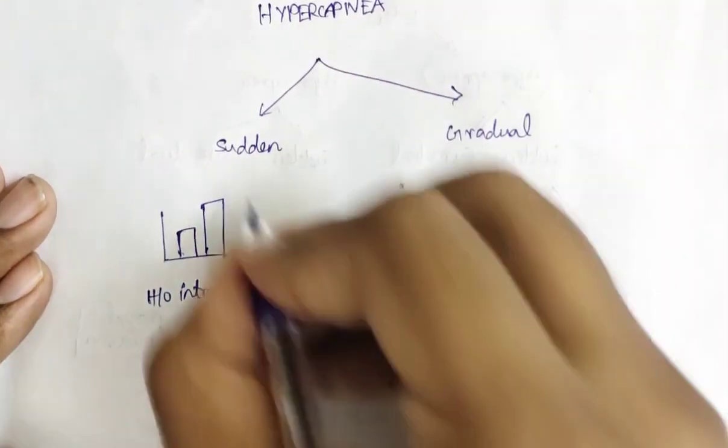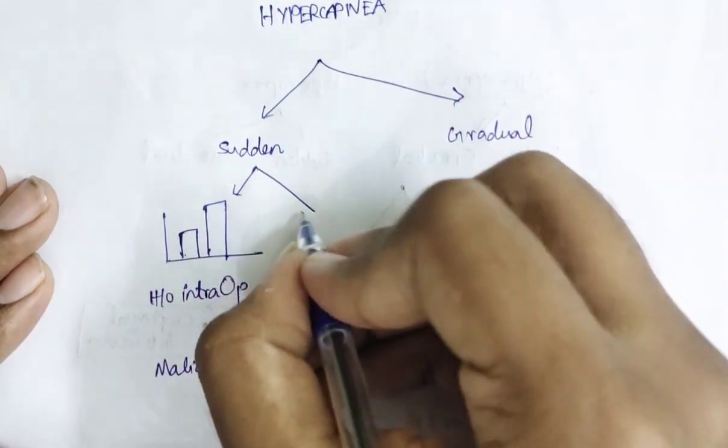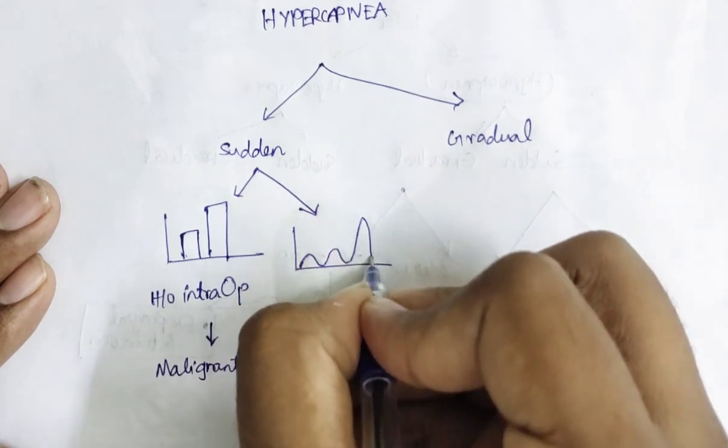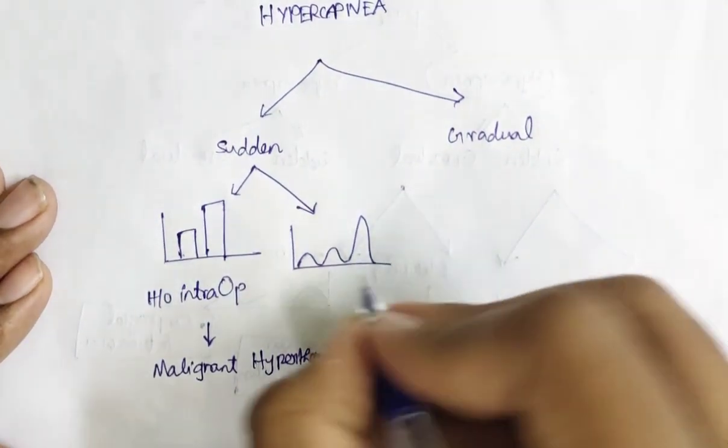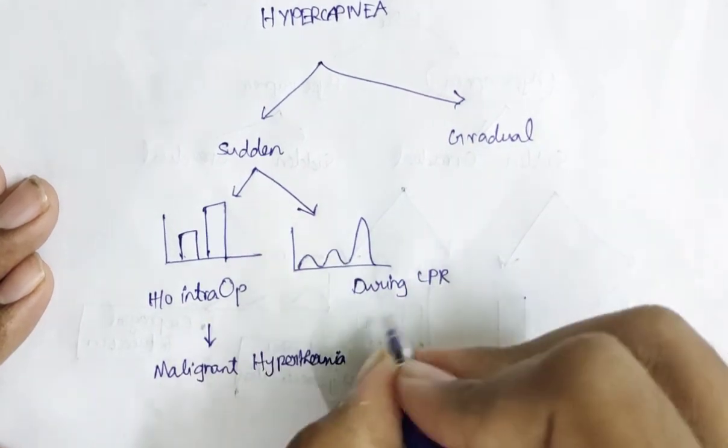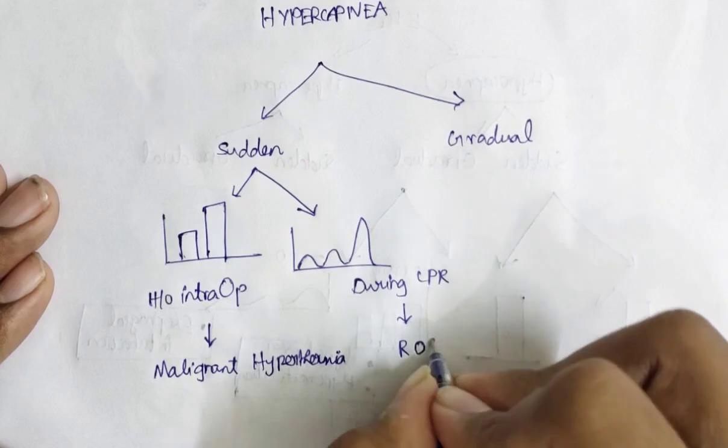Next, if the chart is like this, suddenly it becomes hypercapnia. This occurs during CPR. Hypercapnia describes the return of spontaneous circulation.